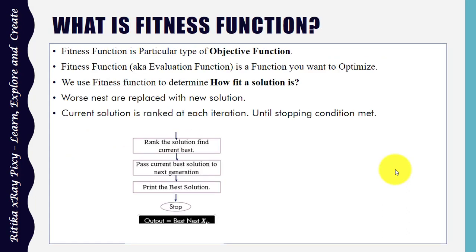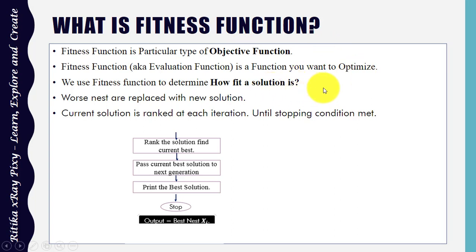Fitness, also known as the evaluation function or objective function, is used for optimization to determine how fit a solution is. In the Cuckoo Search, the worst nests are replaced with new better solutions at each iteration. The current solutions are ranked at each iteration until the stopping condition is met, and the output is the best nest.